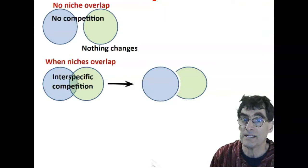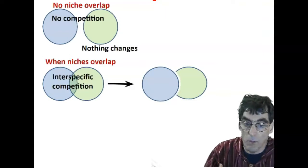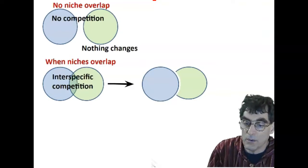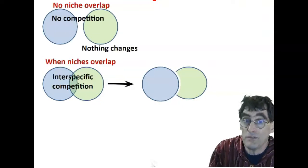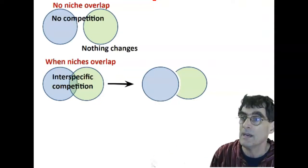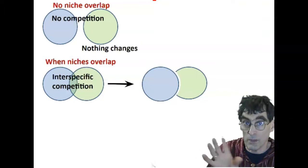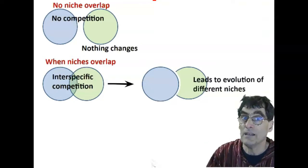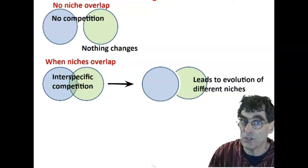The green species in this case, the organisms in that niche overlap didn't do as well, so they didn't pass on their genes. So in that second situation, that led to evolution, changed the evolution, changed the niches.